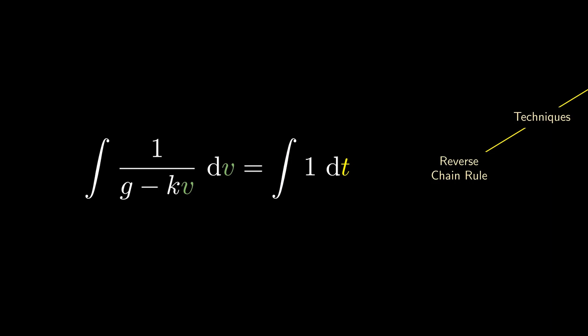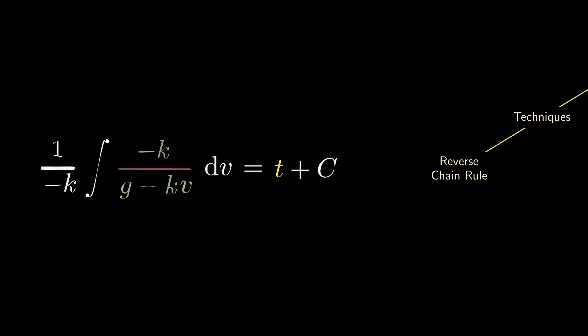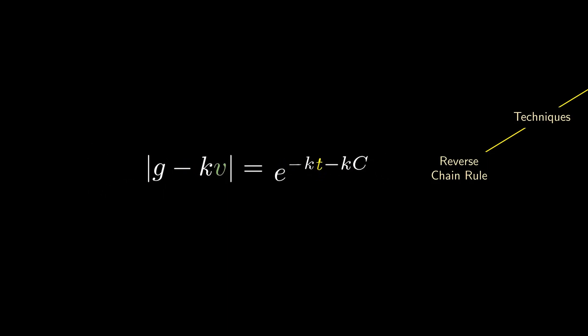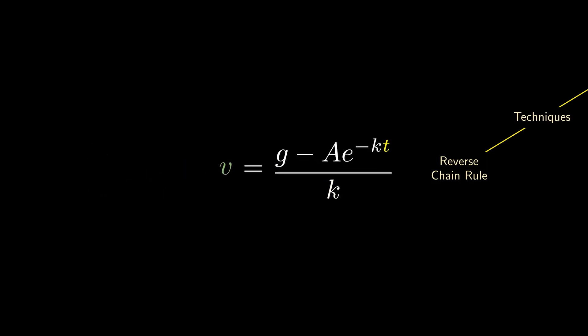We previously asked how to find v given this equation. The right-hand side is easy enough to integrate — it is just t plus a constant. On the left side, we do a little bit of algebra because the numerator is the derivative of the denominator. Integrating that gives us the logarithm. Simplifying with a little bit of algebra, we can obtain the expression for v.